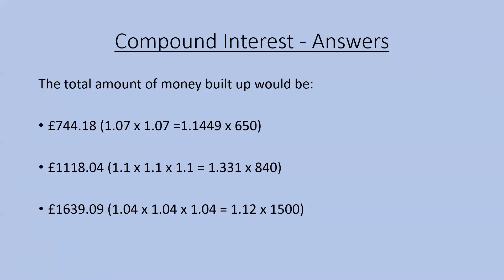In the third and final one, the answer was £1,639.09. The percentage rate was 4% over three years. So 4 divided by 100 equals 0.04, add 1 to get 1.04, then multiply 1.04 by itself three times: 1.04 times 1.04 times 1.04 equals 1.12. Then 1.12 times 1,500 gives a total of £1,639.09.